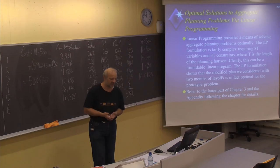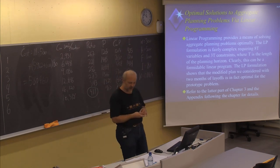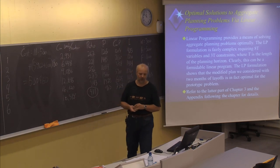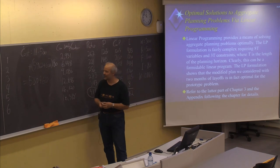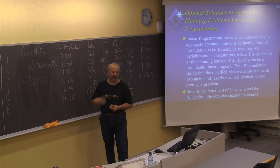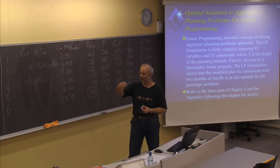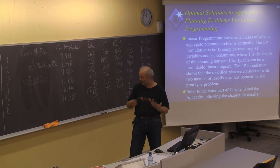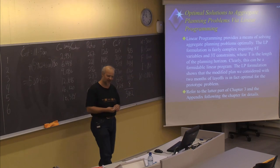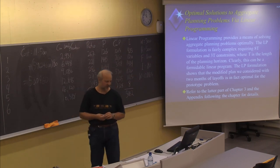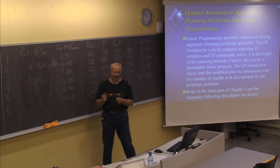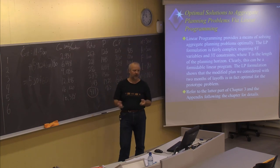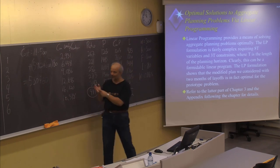Even though the constant workforce cost of 580,460 is slightly higher than the zero inventory plan's 572,900, the constant workforce plan is usually considered better in practice to avoid unaccounted costs of frequently changing workforce. Workers are more satisfied knowing they have stable employment, and there is goodwill from society and workers, plus less need for training and adjustment. All models in this course are limited and don't show the full picture — in the real world, other factors must also be considered.